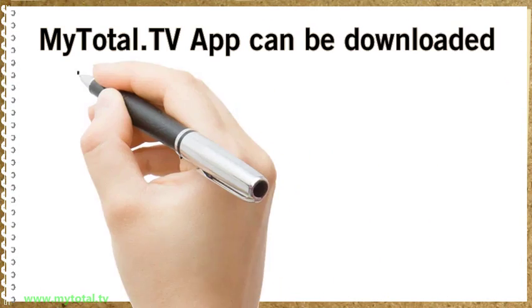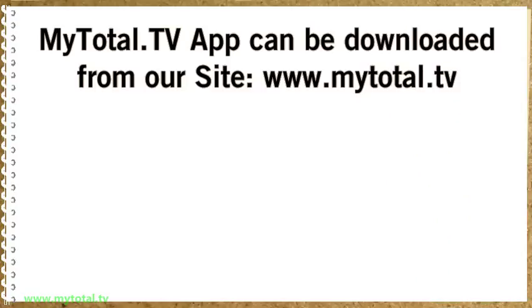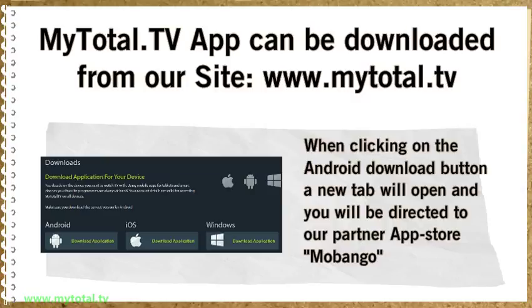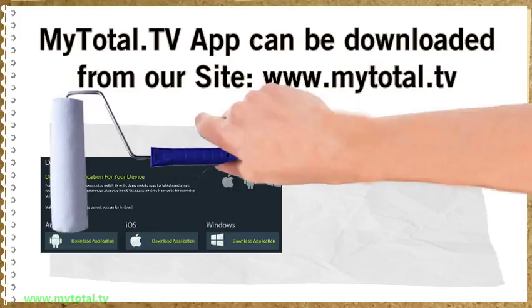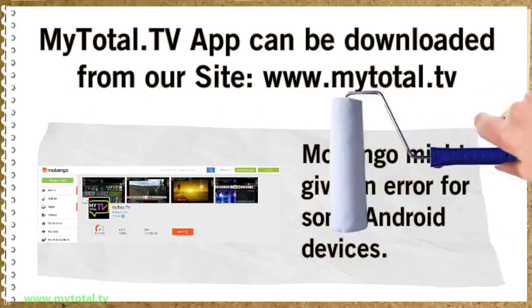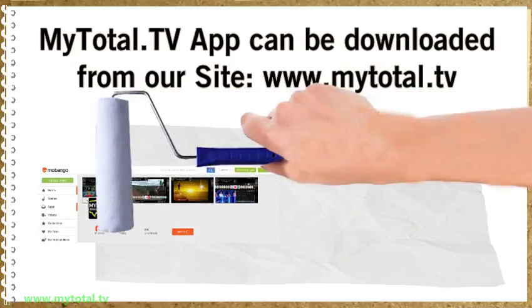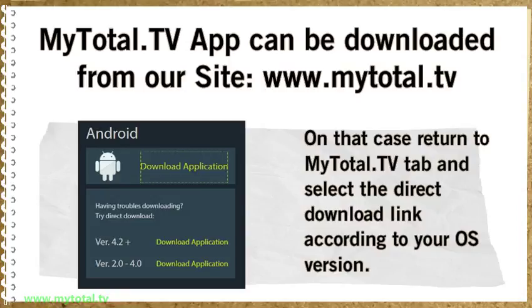My Total TV app can be downloaded from our site, www.metotalTV. When clicking on the Android download button, the new tab will open and you will be directed to our partner app store, Mobongo. Mobongo might give an error for some Android devices. In that case, return to the my Total TV tab and select the direct download link according to your OS version.